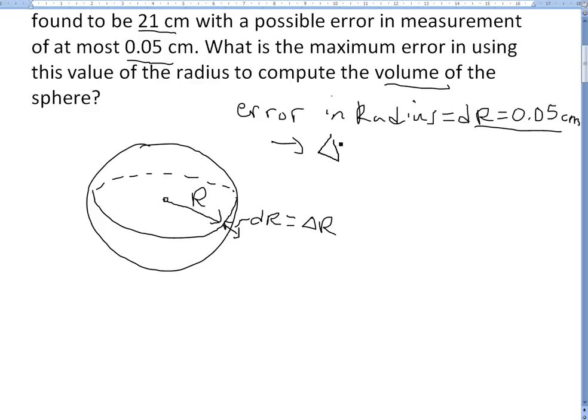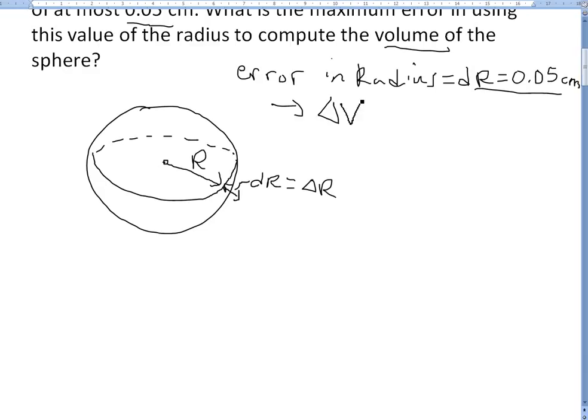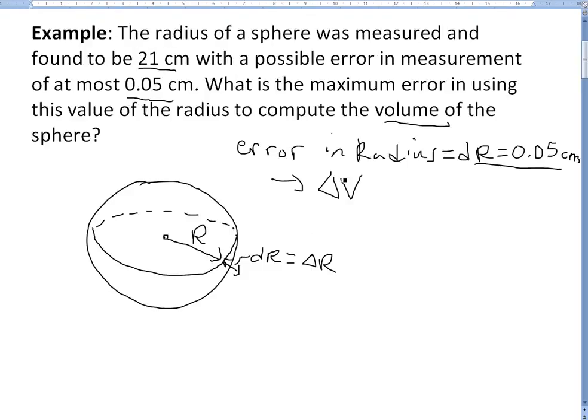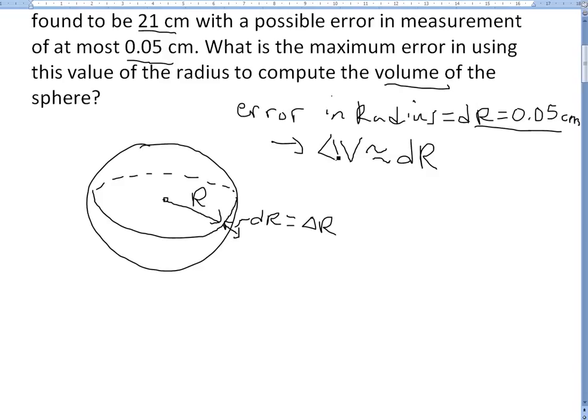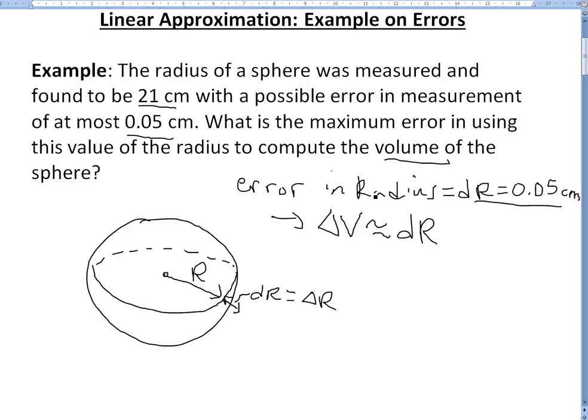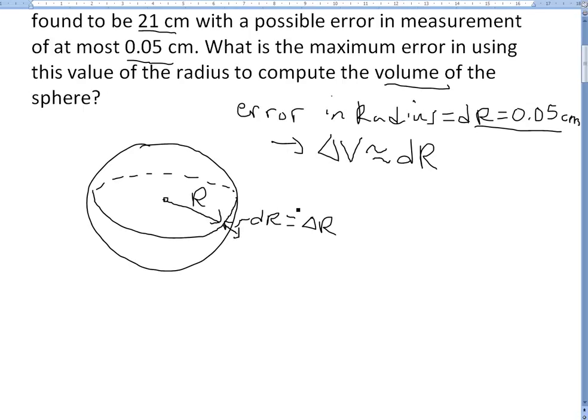We're trying to find basically the error or the change, the possible difference in volume or delta V. But like I showed in my earlier video, we can approximate this using differential notation dV instead of actually calculating what volume is when we increase this. So using differential notation we can solve this because we know right now R equals 21 centimeters.